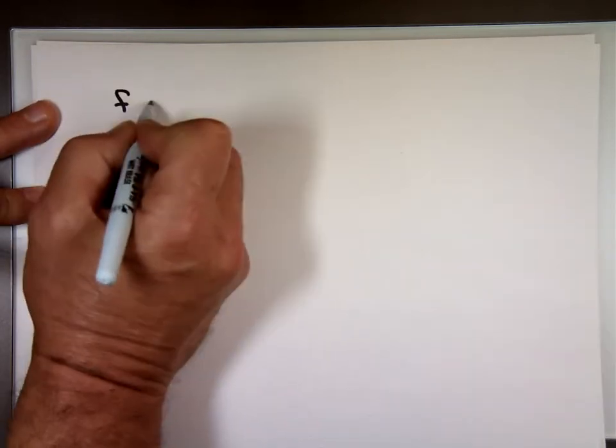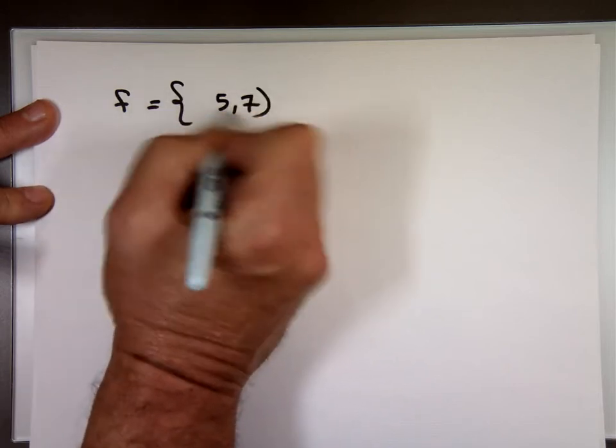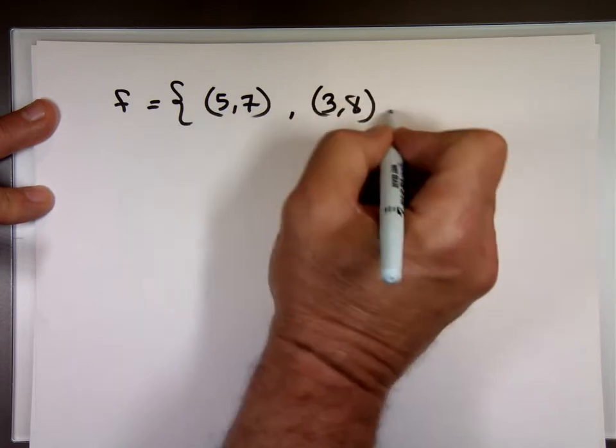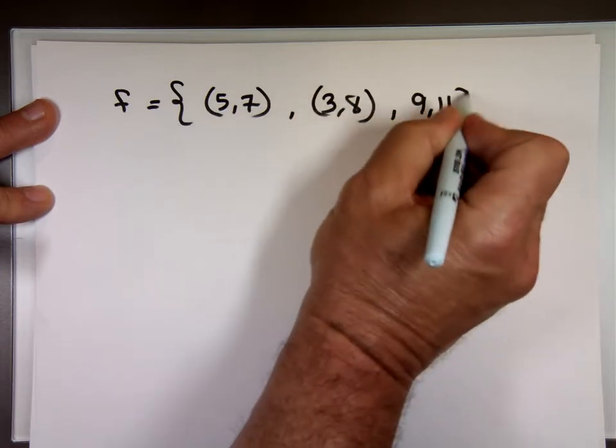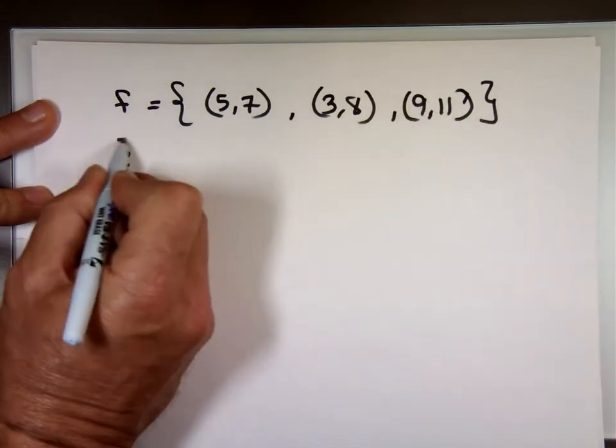If I gave you these points, just to make sure you understand the inverse and the domain. If I said, this is the function F, has these points in it, 5 and 7, 3 and 8, 9 and 11. What do you think that the inverse of that function will be then?